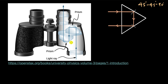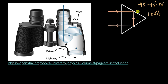We can ask ourselves: why do we use prisms? Why can't we just use mirrors — let the light reflect off a mirror tilted at 45°, then a second mirror, and then it reaches the eyepiece? One reason lies in the intensity of light reflected by these two objects. Because light undergoes total internal reflection, prisms reflect 100% of the light with no absorption whatsoever.